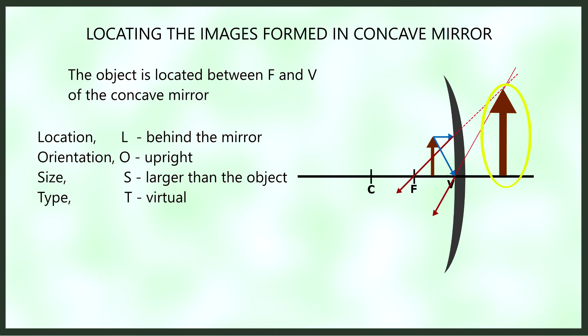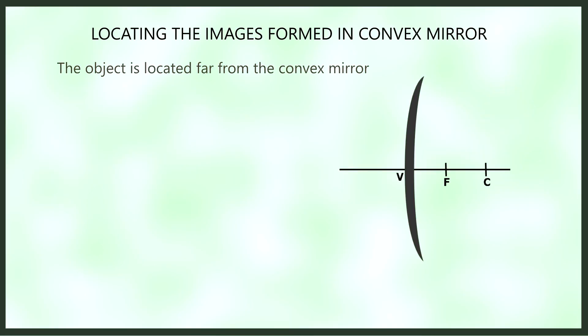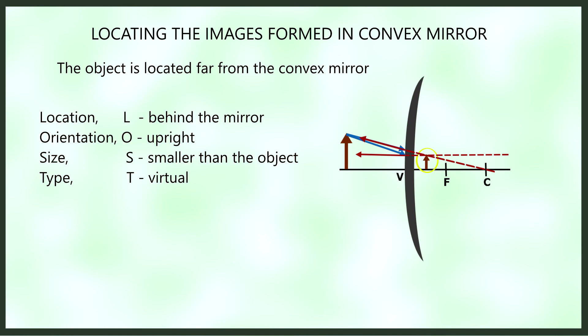For the convex mirror with the object placed far from the mirror, we use the FP ray and CC ray. We observe that the two reflected rays do not meet, so we extend them to find the image. The extended reflected rays meet behind the mirror — the image is upright since the meeting point is above the principal axis, smaller than the object, and virtual.